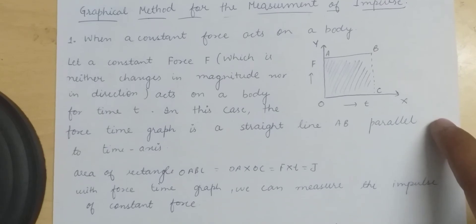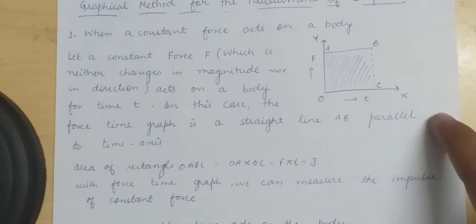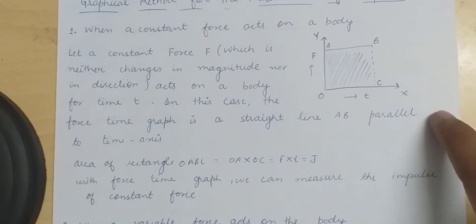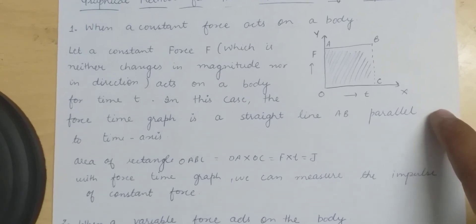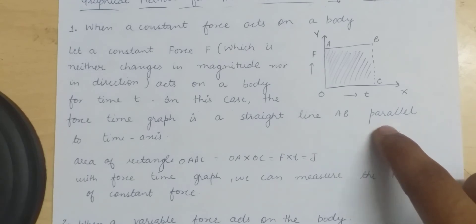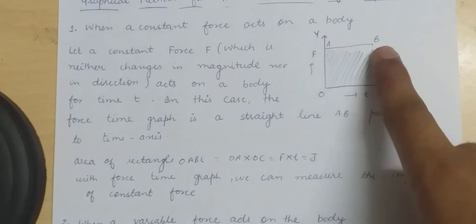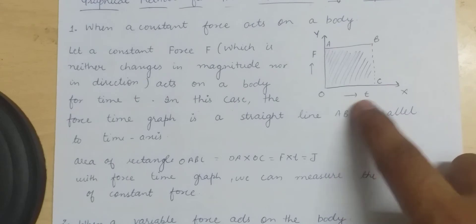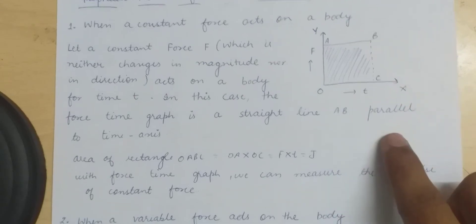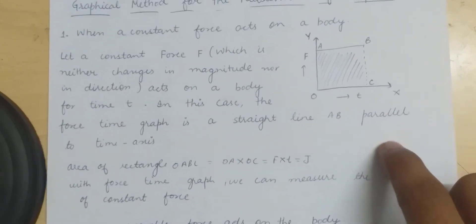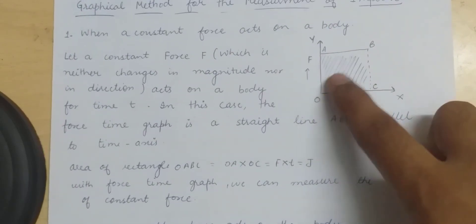First case: when a constant force acts on a body. Let a constant force F, which does not change in magnitude or direction, act on a body for time t. In this case, the force-time graph is a straight line AB parallel to the time axis.